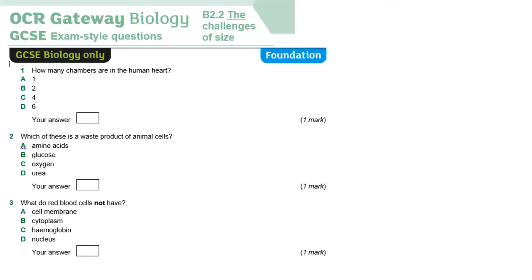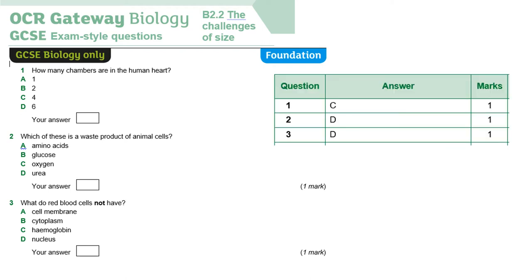So questions one to three are multiple choice. The number of chambers in the human heart is four so that answer is C. Which of these is a waste product of animal cells? You need to work out which one the body gets rid of, so that's urea. We use amino acids to make proteins, glucose for respiration, and oxygen for respiration, so urea is the waste product. What do red blood cells not have? The key here is they don't have a nucleus because that means they can carry more oxygen. They do have haemoglobin, cytoplasm, and a cell membrane, so the answer is D. Okay so the answers are C, D and D.